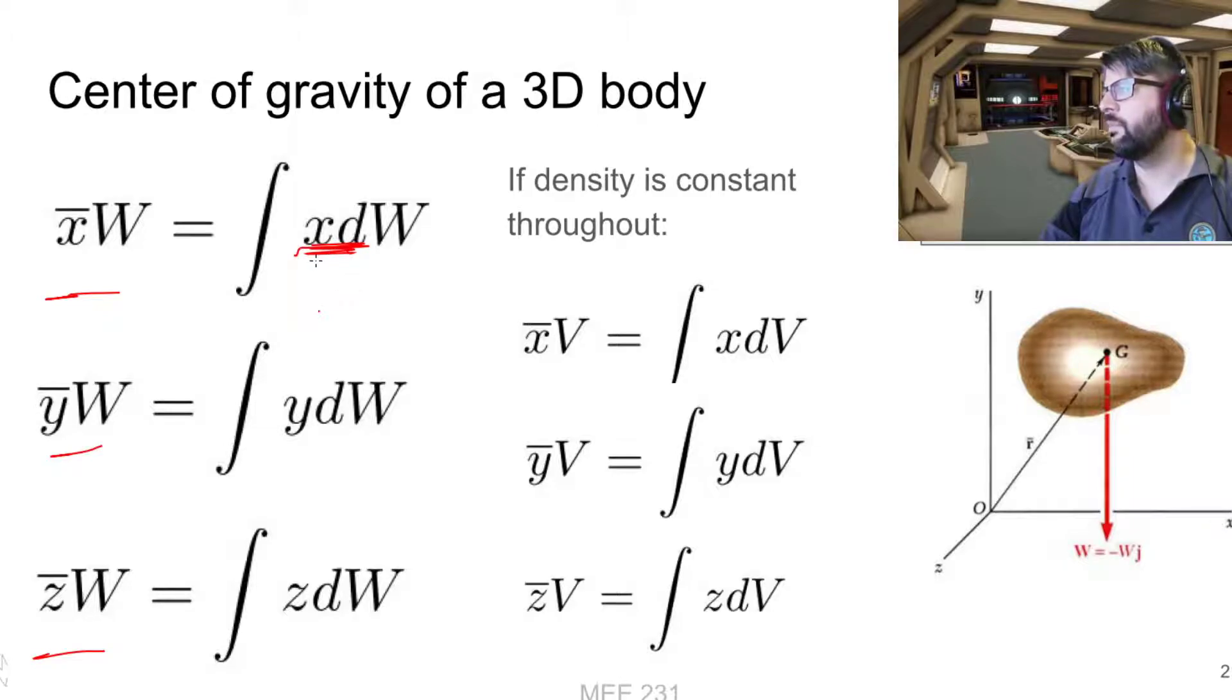It just works out to essentially the same deal as we saw before where x bar—the distance from the x-axis times the weight in total—is equal to the distance of each individual component times its tiny little weight all summed up, and then divide by W gives us our x bar.